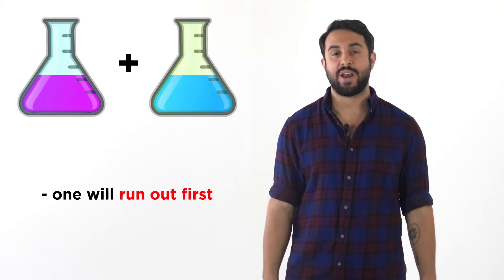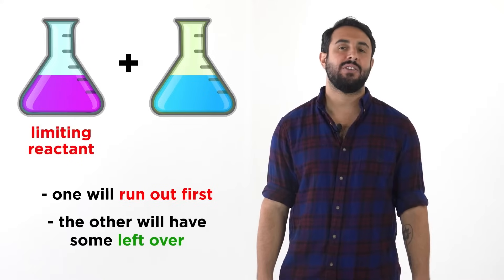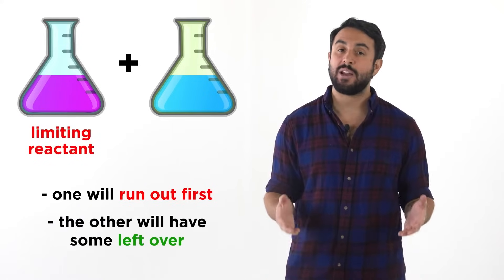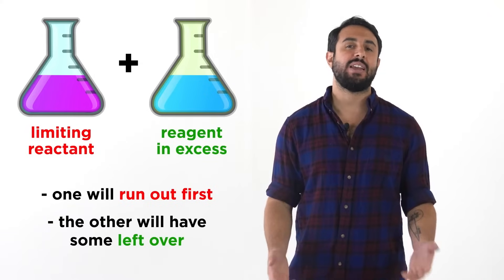Inevitably one substance will run out first, leaving some of the other unable to react. The reactant that runs out first is called the limiting reactant, or limiting reagent, and the one that has some left over will be called the reagent in excess.